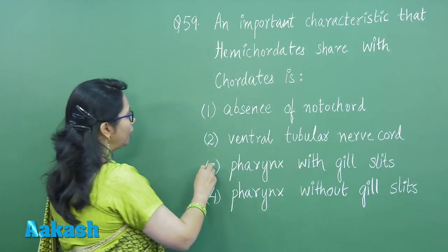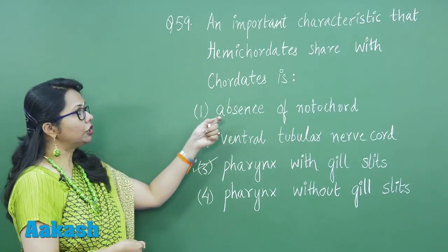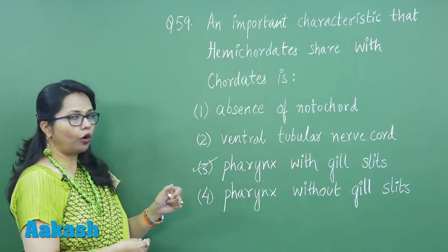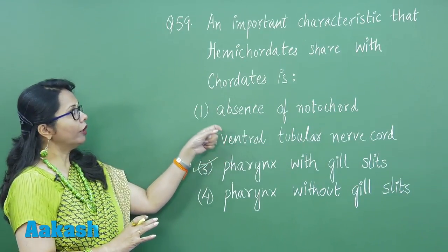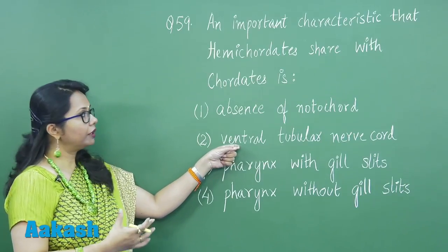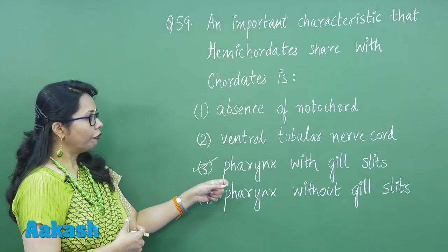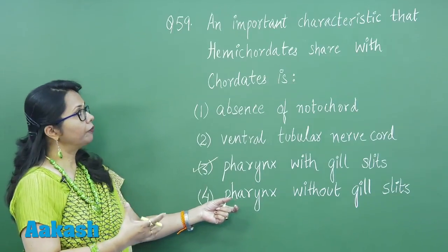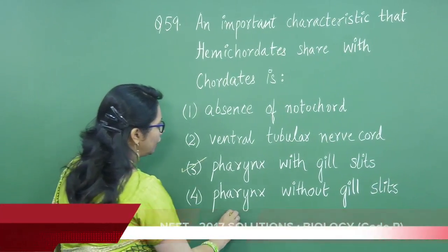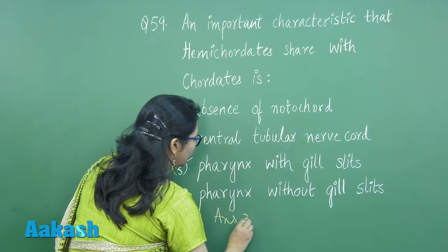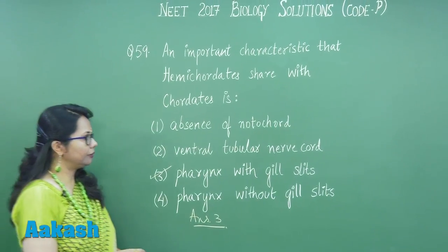So this is our right answer. Chordates always have a notochord at any stage of life. The nerve cord in hemi-chordata is on the ventral side, but in chordata it is on the dorsal side. Pharynx without gill slits is not a character of either group. So our best answer is option 3, and we can move on to question 60.